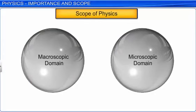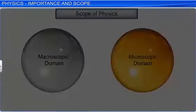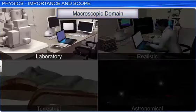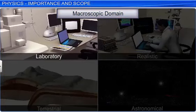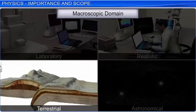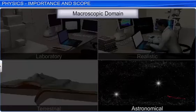The scope of physics can be divided into two major domains that are macroscopic and microscopic. The macroscopic domain deals with phenomena at laboratory, terrestrial, and astronomical scale.